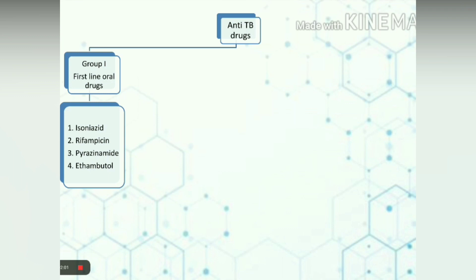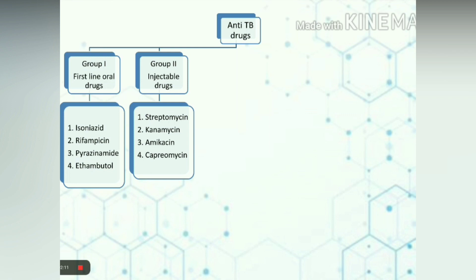Let us see the classification of anti-TB drugs. Group 1 consists of first-line oral drugs which include isoniazid, rifampicin, pyrazinamide, and ethambutol. Group 2 are the injectable drugs which consist of streptomycin, kanamycin, amikacin, and capreomycin. Group 1 and 2 are the most commonly used drugs.